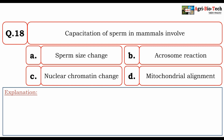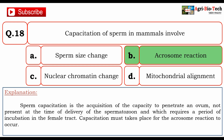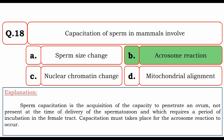Capacitation of sperm in mammals involves: A. sperm size change, B. acrosome reaction, C. nuclear chromatin change, D. mitochondrial alignment. The correct option is B. acrosome reaction. Sperm capacitation is the acquisition of capacity to penetrate an ovum, not present at the time of delivery of spermatozoa, and which requires a period of incubation in the female tract. Capacitation must take place for the acrosome reaction to occur.